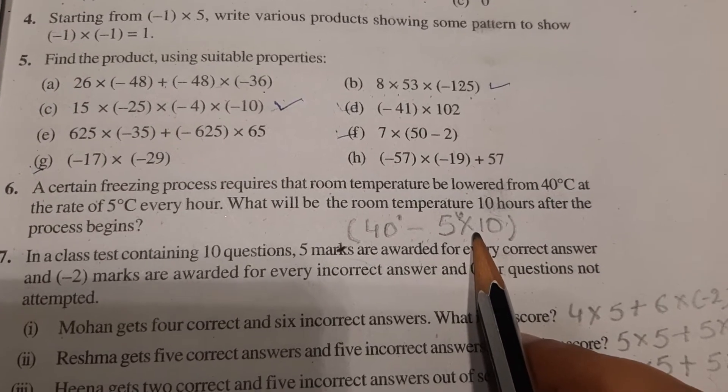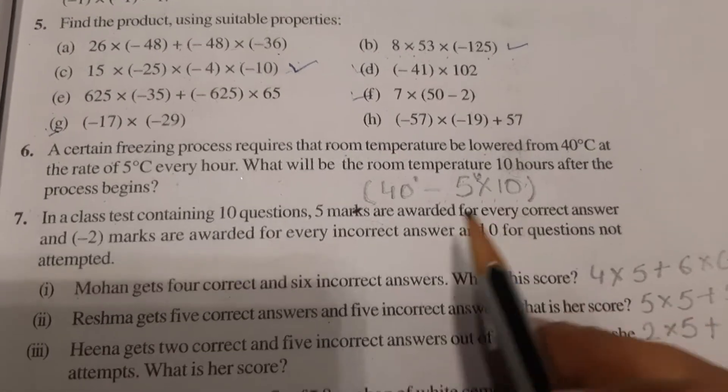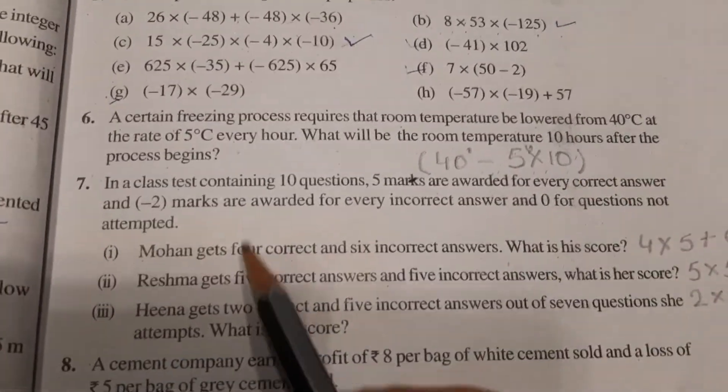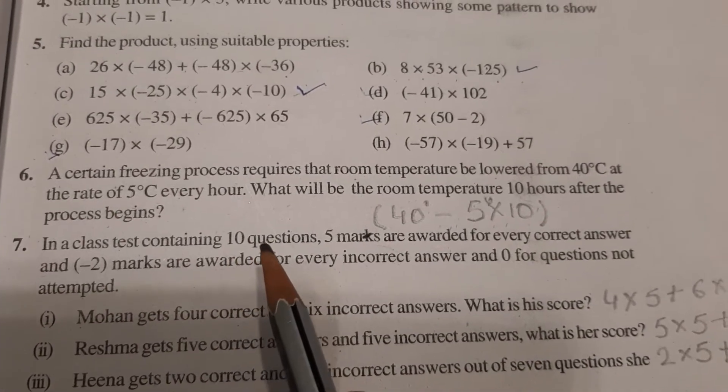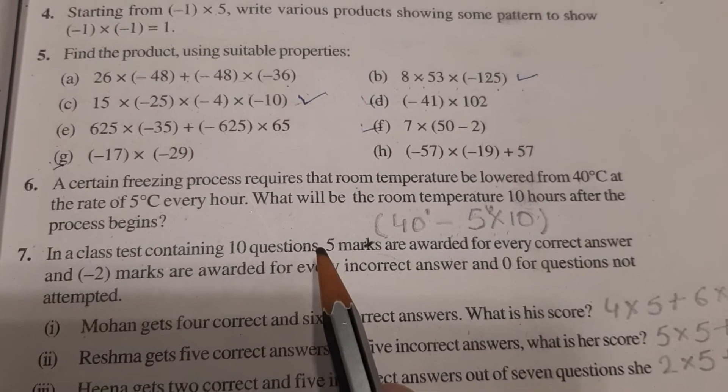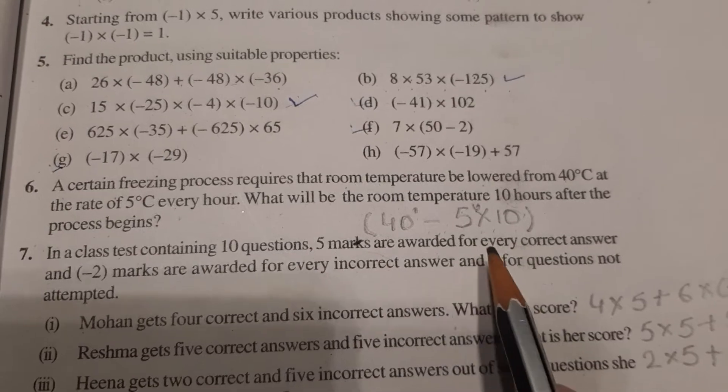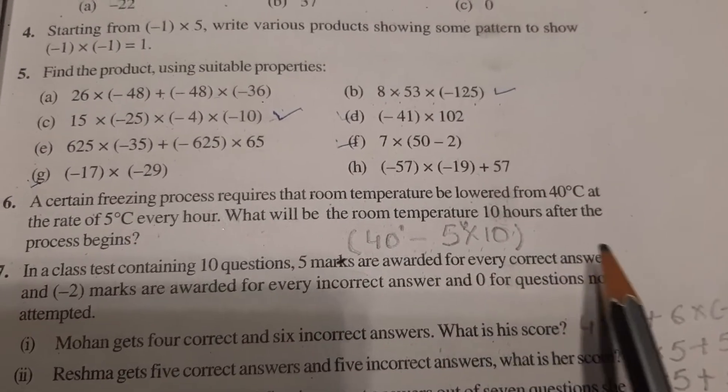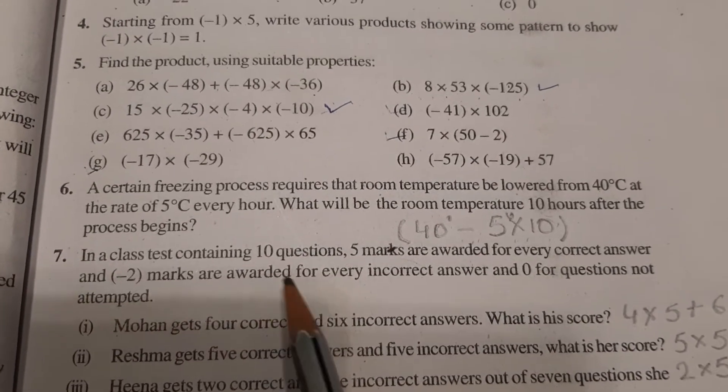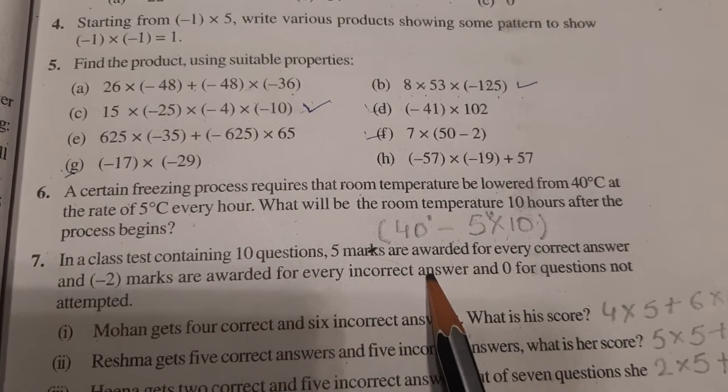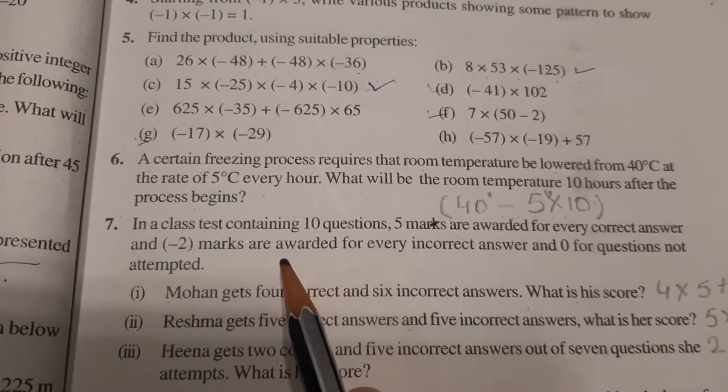Next example question: In a class test containing 10 questions, 5 marks are awarded for every correct answer and minus 2 marks are awarded for every incorrect answer and 0 for questions not attempted.